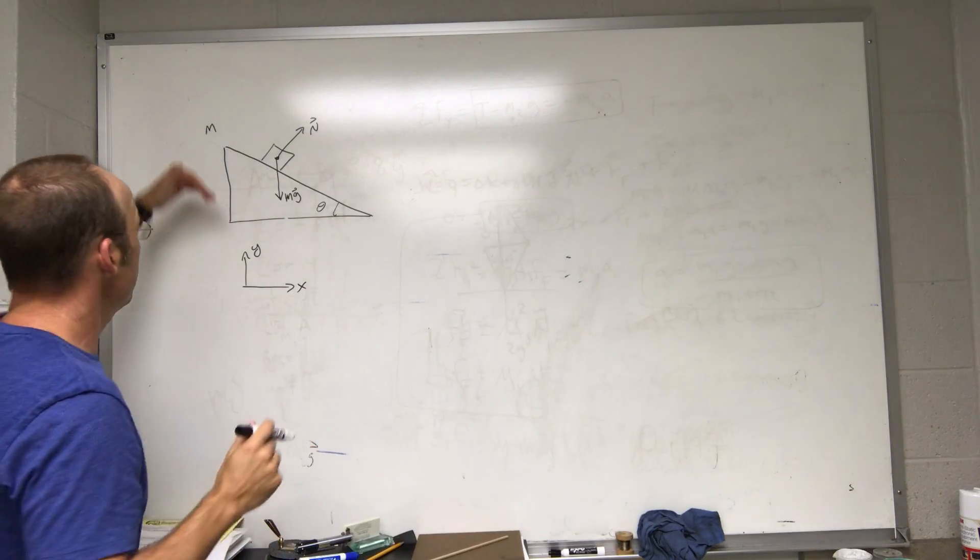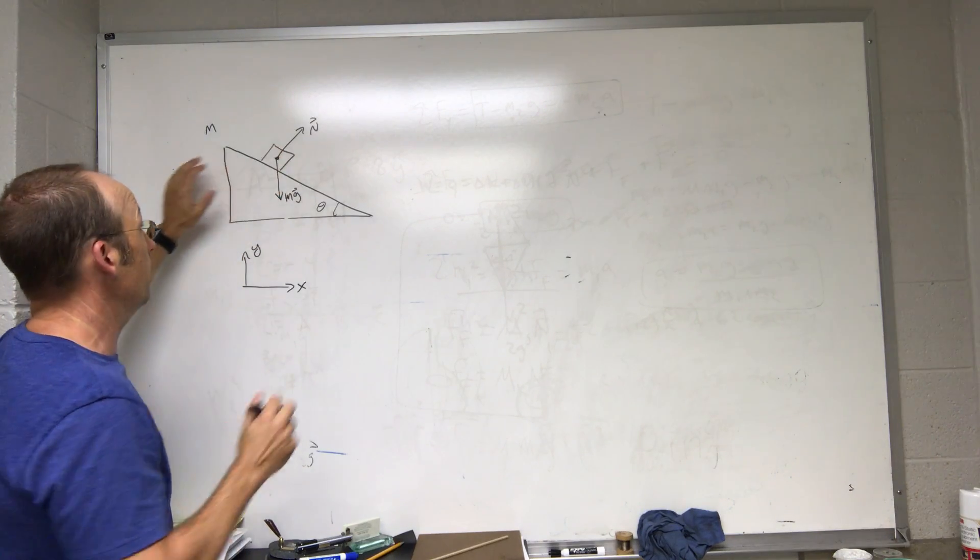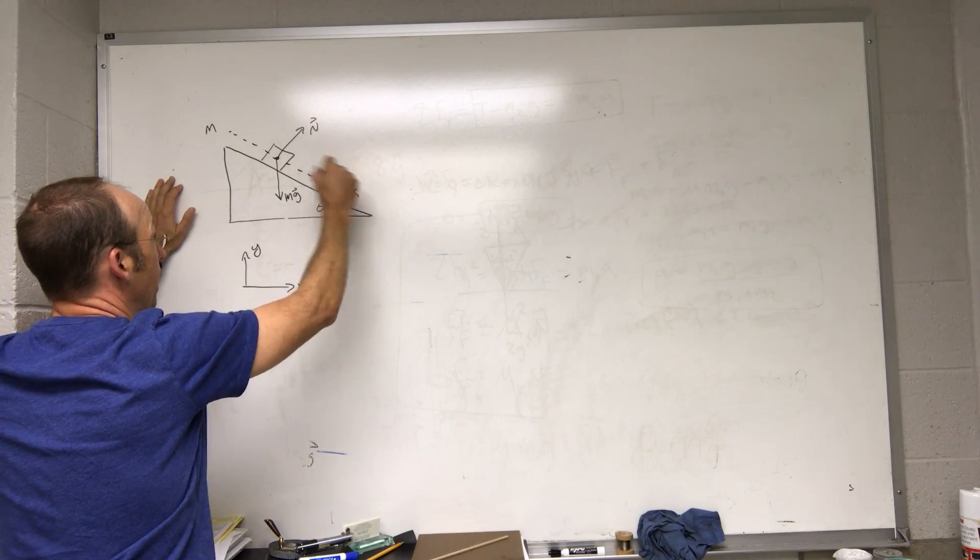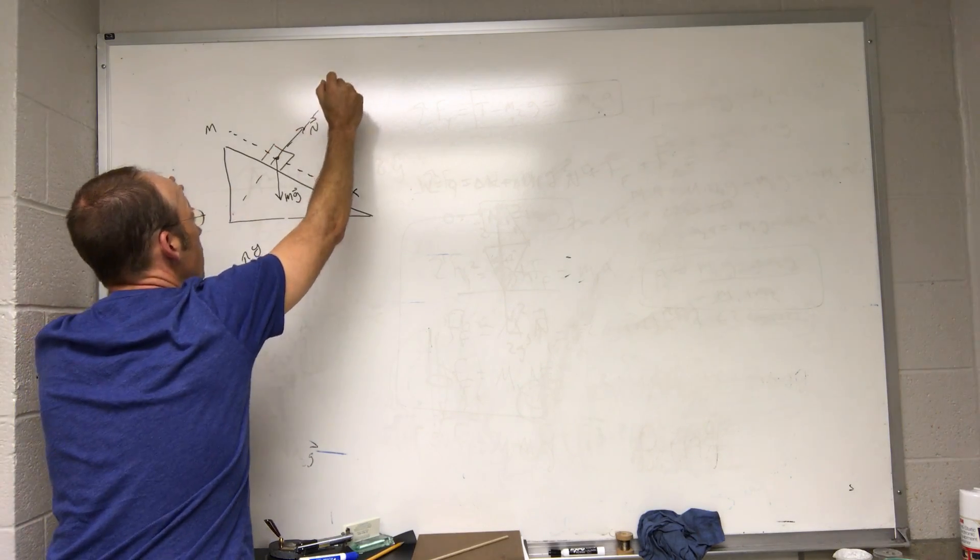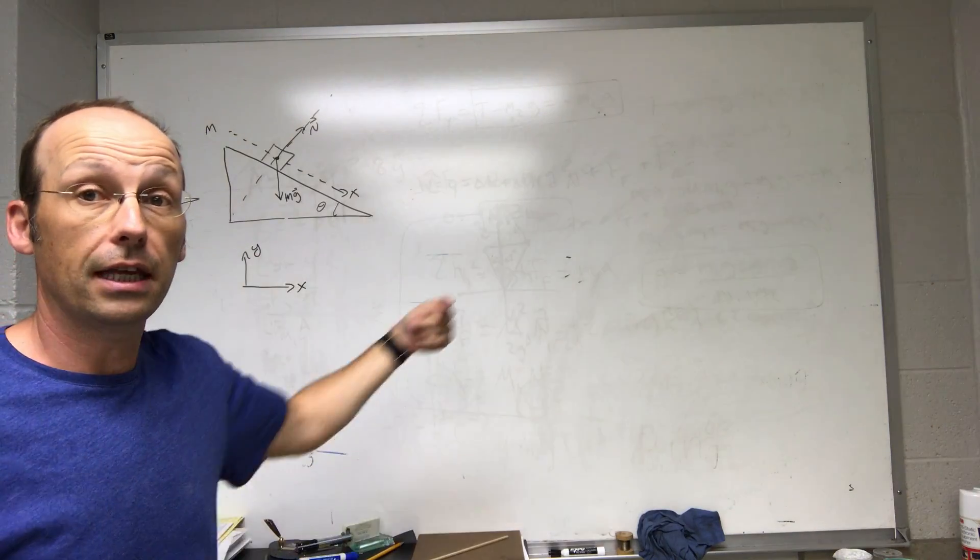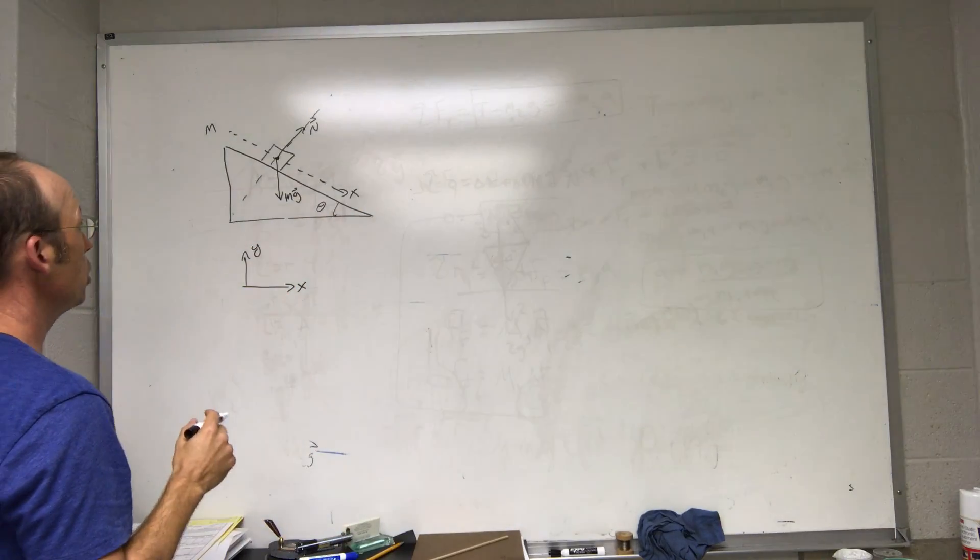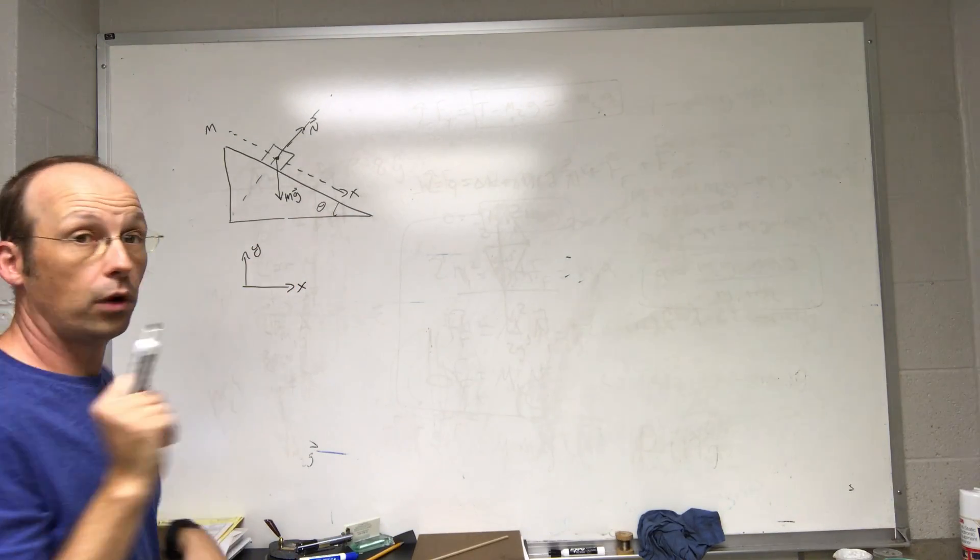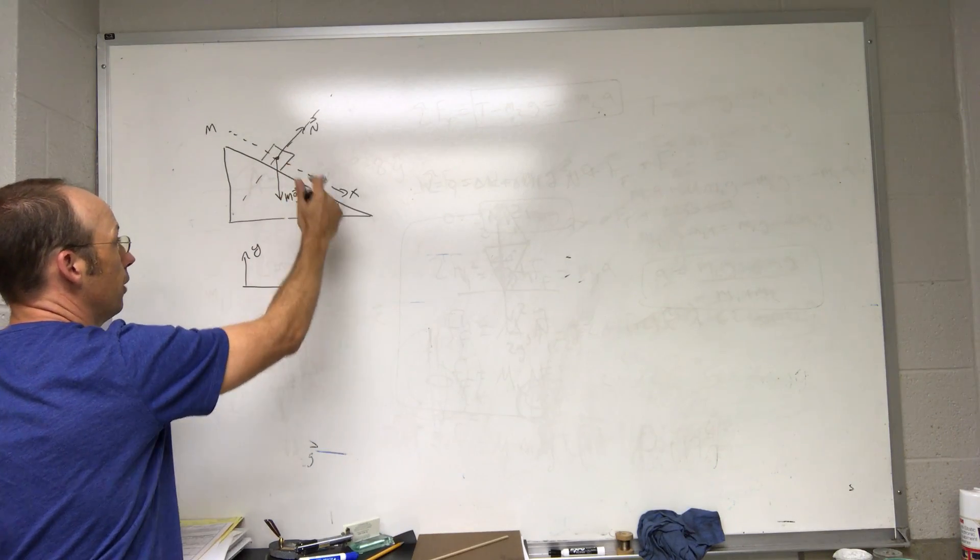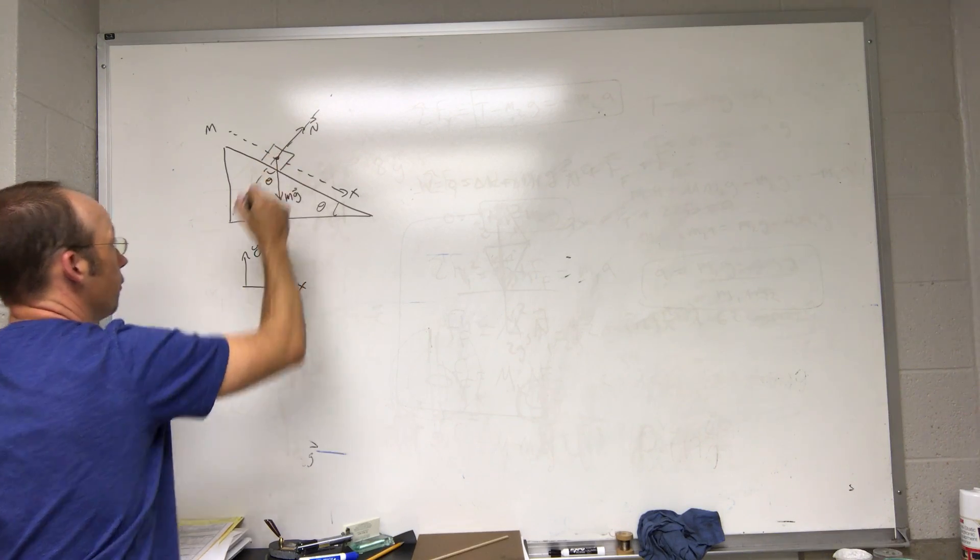If I know that this block doesn't accelerate this way because it stays on the plane, then I can say this is my x direction. This is my y direction. And so now I only have an acceleration in the x direction. So I'm going to do that. Now there is one geometrical trick, and that is to play around with these angles. If that angle is theta, you should be able to show yourself that this angle is also theta.